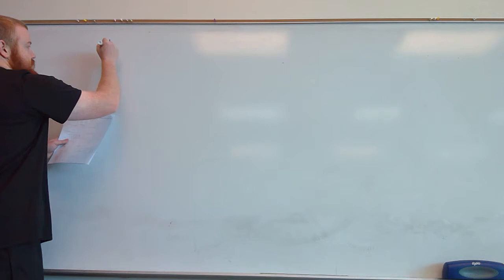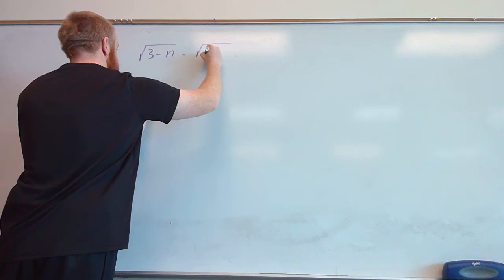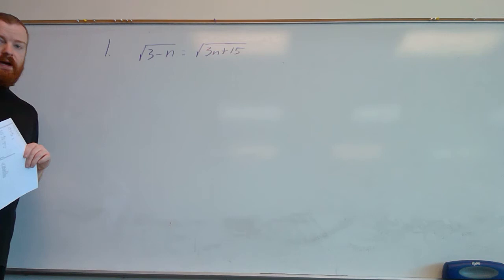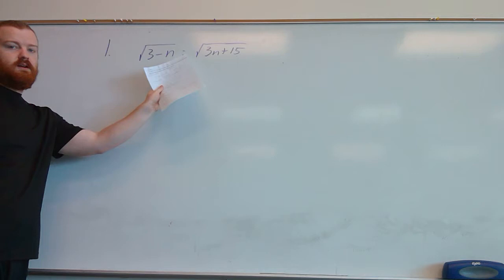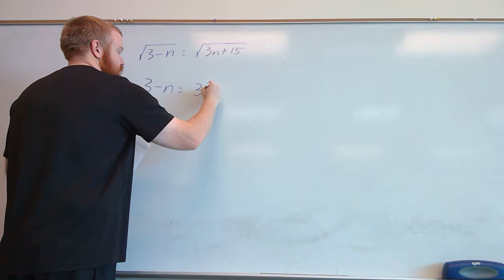The first one is question number one — we want to solve a radical equation. When solving radical equations, there are a few different types. The first type we see here has a radical equal to another radical. Whenever we have something like this, we just take the insides of those radicals and set them equal to each other. So we set 3 minus n equal to 3n plus 15.